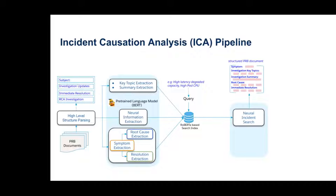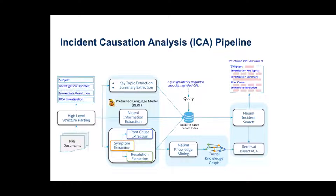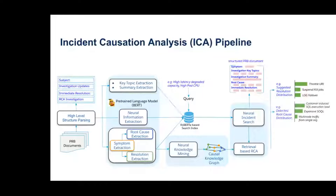We also have a neural knowledge mining module that builds a causal knowledge graph from the extracted information. Together with the neural incident search, this enables retrieval-based root cause analysis: given a symptom query like 'high latency, high pod CPU,' it can suggest possible resolutions and root causes, and show the relevant portion of the causal knowledge subgraph. For example, for this query, it detected that customer-induced SQL execution load is one possible root cause.